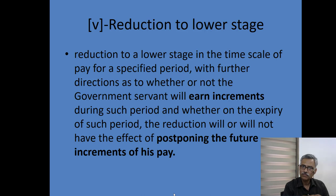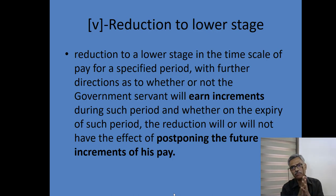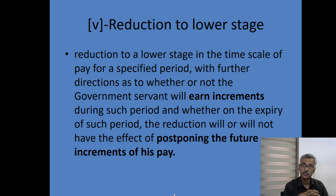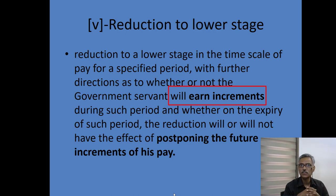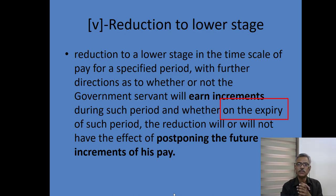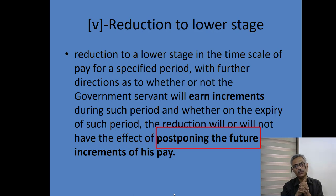In today's video we will talk about the financial effect of penalty number 5, which is the first major penalty. There are five major penalties, and this first one talks about reduction to a lower stage in the time scale of pay for a specified period, with further direction as to whether or not the government servant will earn increments. During the penalty period, whether he will earn increment or not has to be stipulated by the discipline authority in the penalty order. Further, on expiry of such period, whether the reduction will or will not have the effect of postponing the future increments of his pay must also be specified.